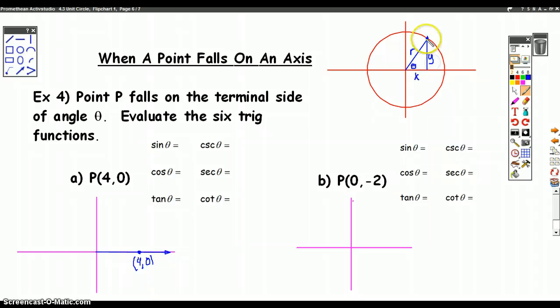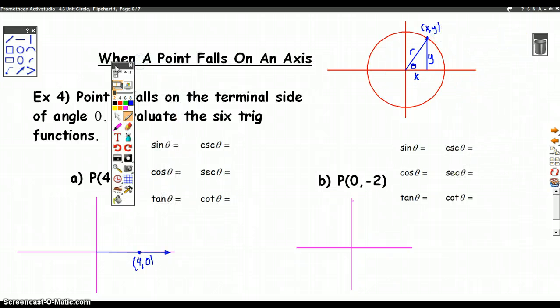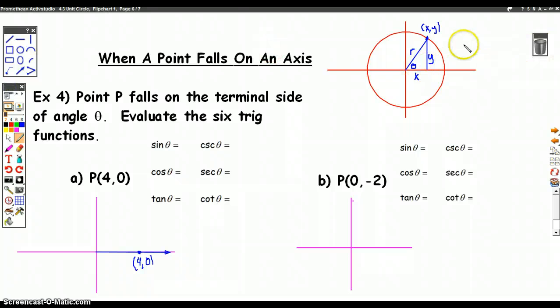We can talk about the sine, cosine, and tangent of angle theta using this picture. If we do that, it's going to allow us to answer questions like these really easily. According to this picture, the sine of theta is y over r, cosine of theta is x over r, and the tangent of theta is y over x.